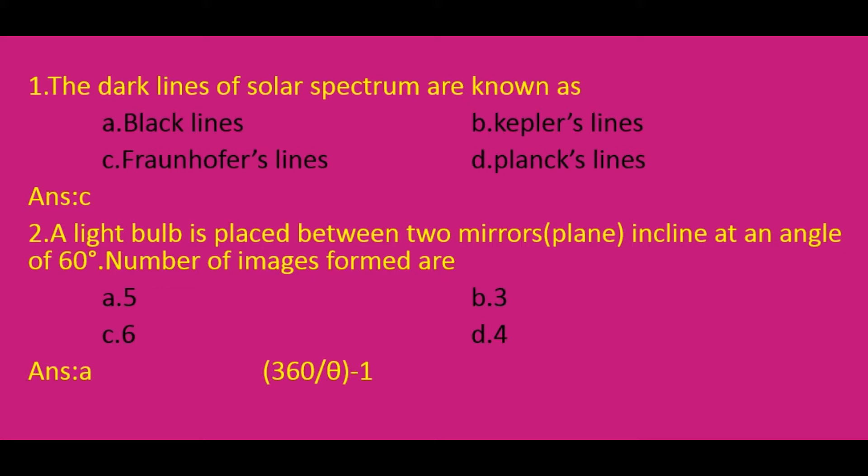A light bulb is placed between two plane mirrors inclined at an angle of 60 degrees. The number of images formed? We use the formula 360/θ − 1. Here θ = 60 degrees. Substituting, the number of images is 5. So the answer is A.